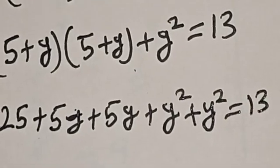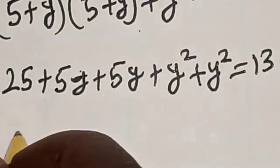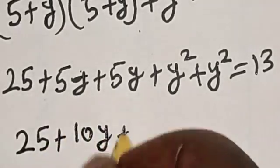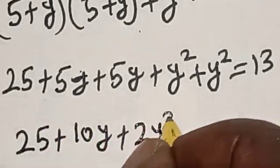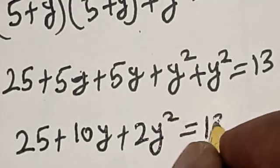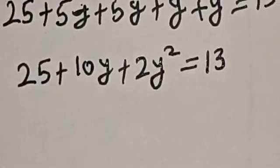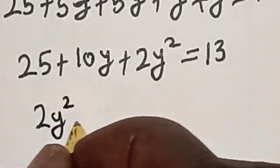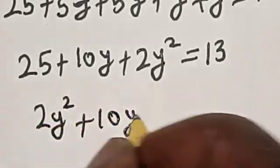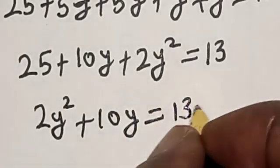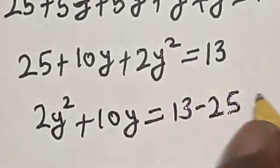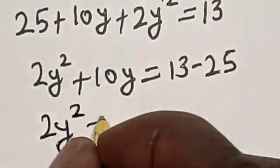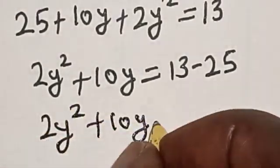5 times 5 is 25, plus 5y plus 5y plus y squared, then plus y squared is equal to 13. Now we have 25 plus 10y plus 2y squared is equal to 13. Then this is 2y squared plus 10y is equal to 13 minus 25.